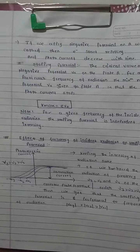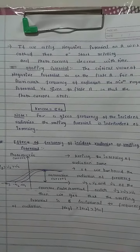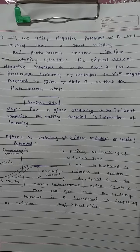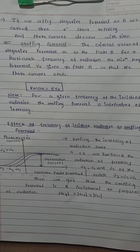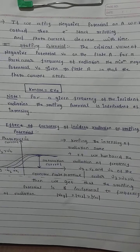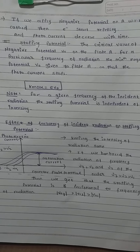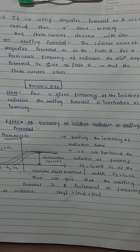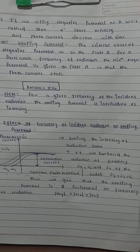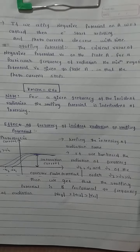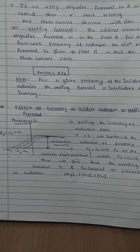एक important note: for a given frequency of incident radiation, the stopping potential is independent of intensity। यानि intensity यानि number of radiation को जितना भी increase किया जाए, stopping potential पे कोई फर्क नहीं पड़ता, क्योंकि stopping potential का काम है जो सबसे highest moving electron है उसको stop करना, और वो intensity के साथ vary नहीं होता।